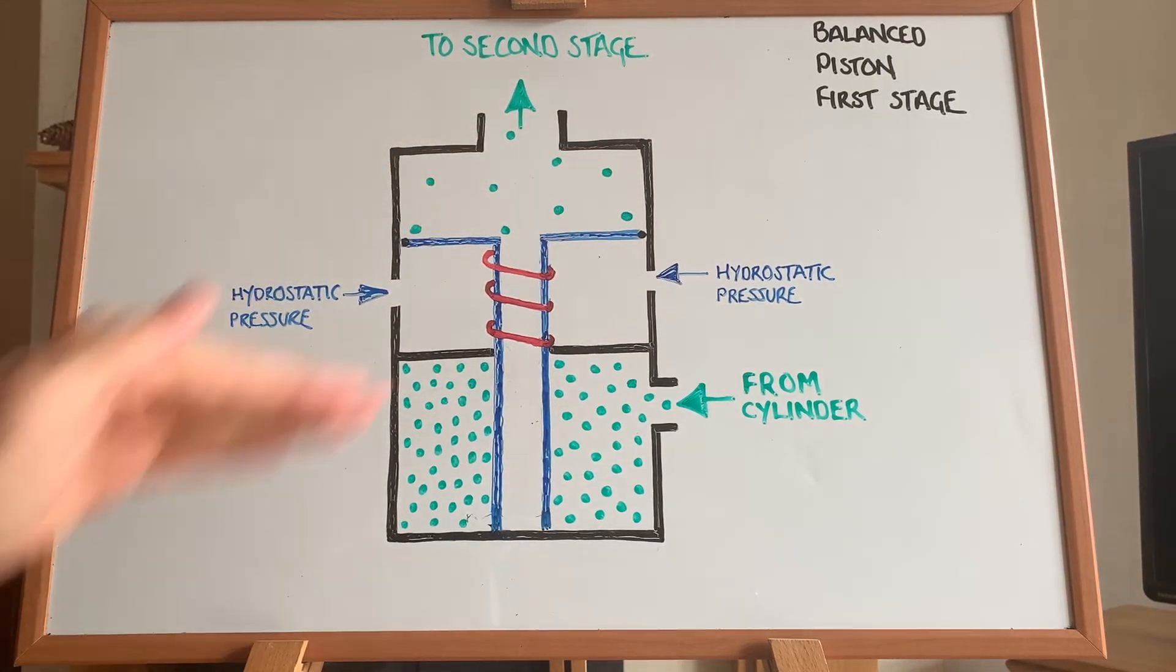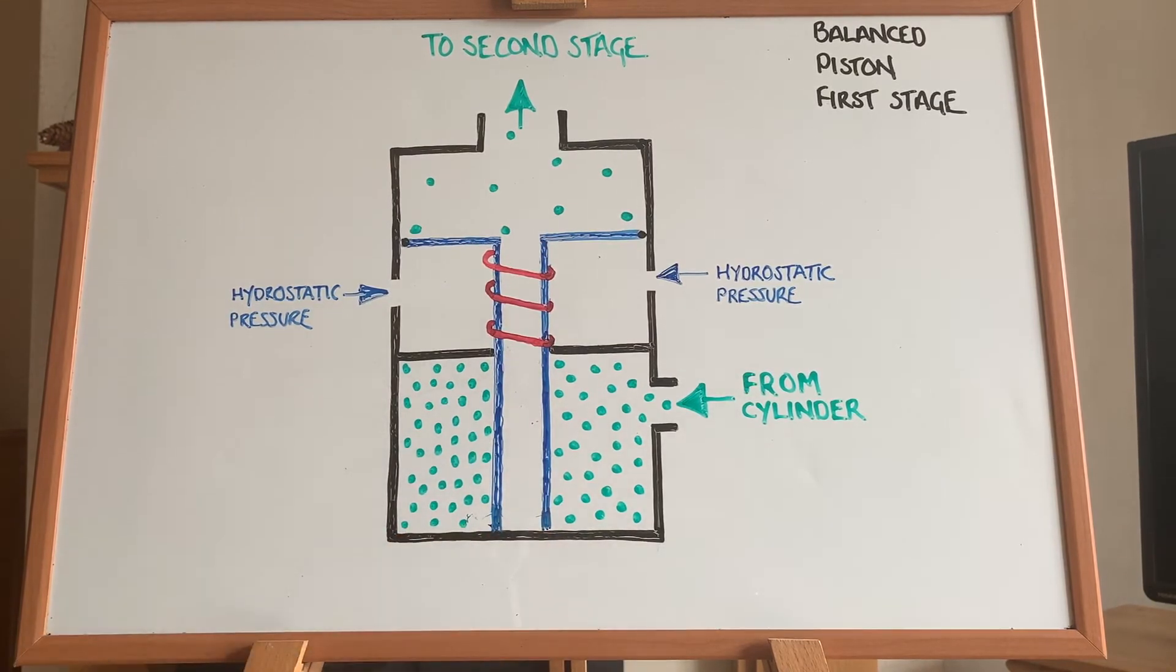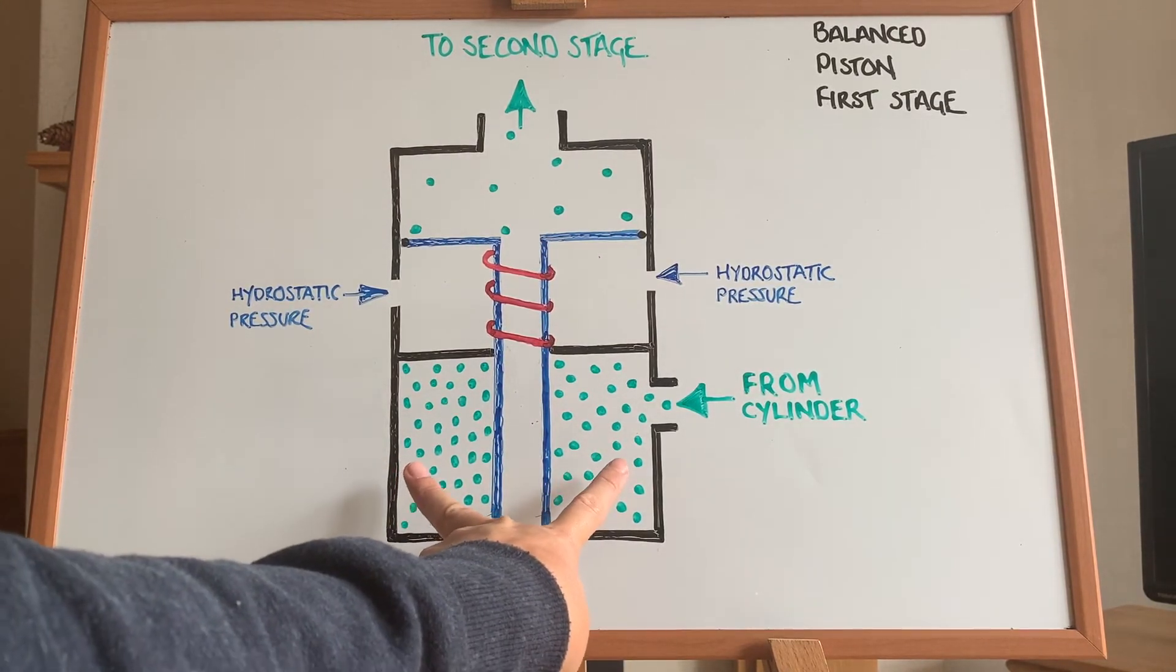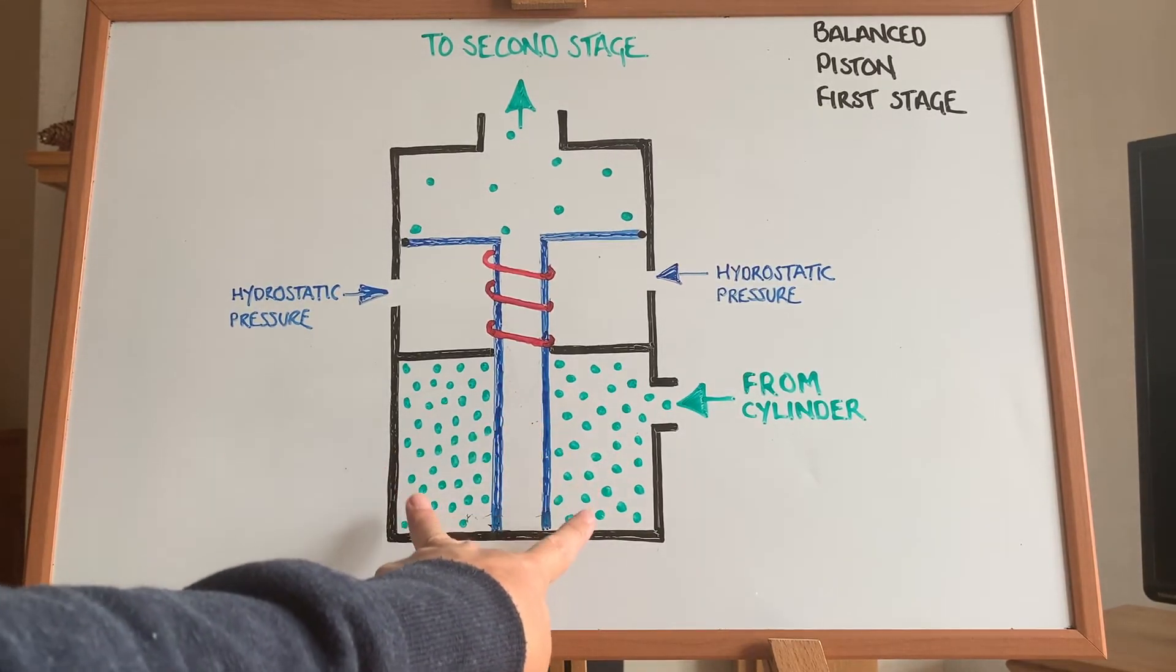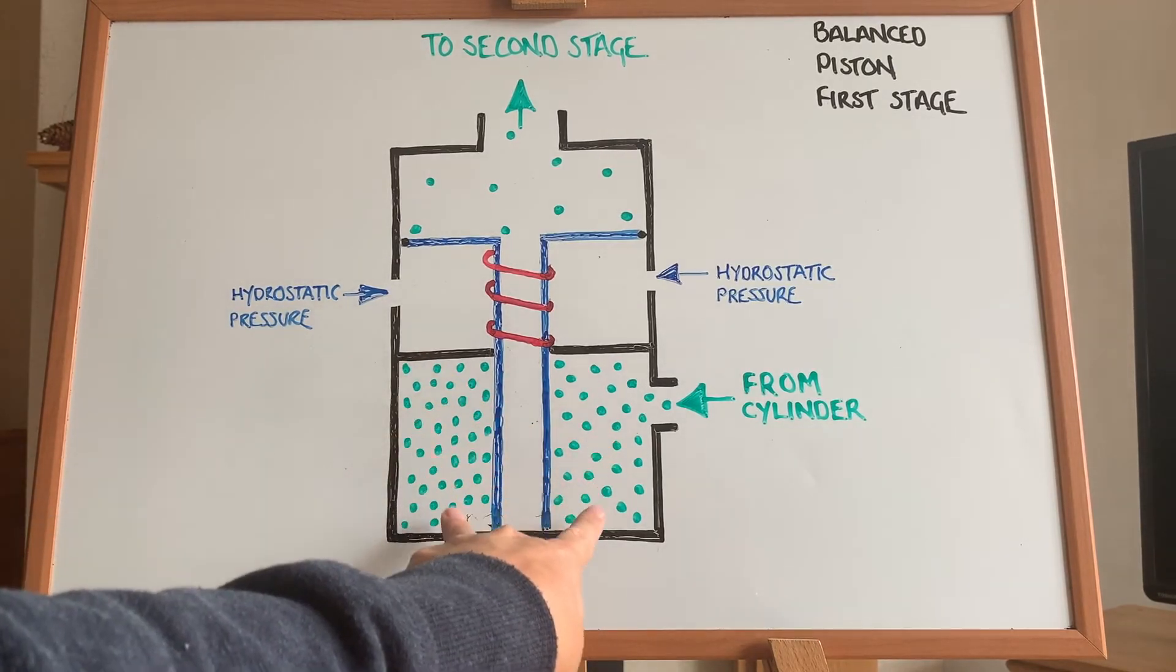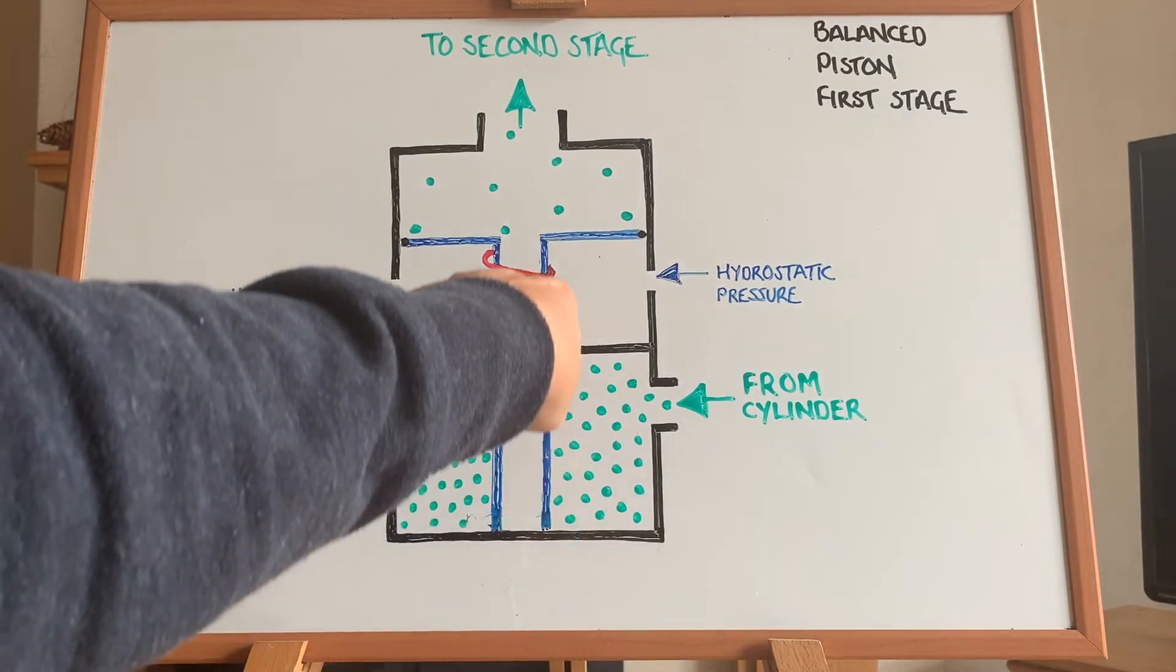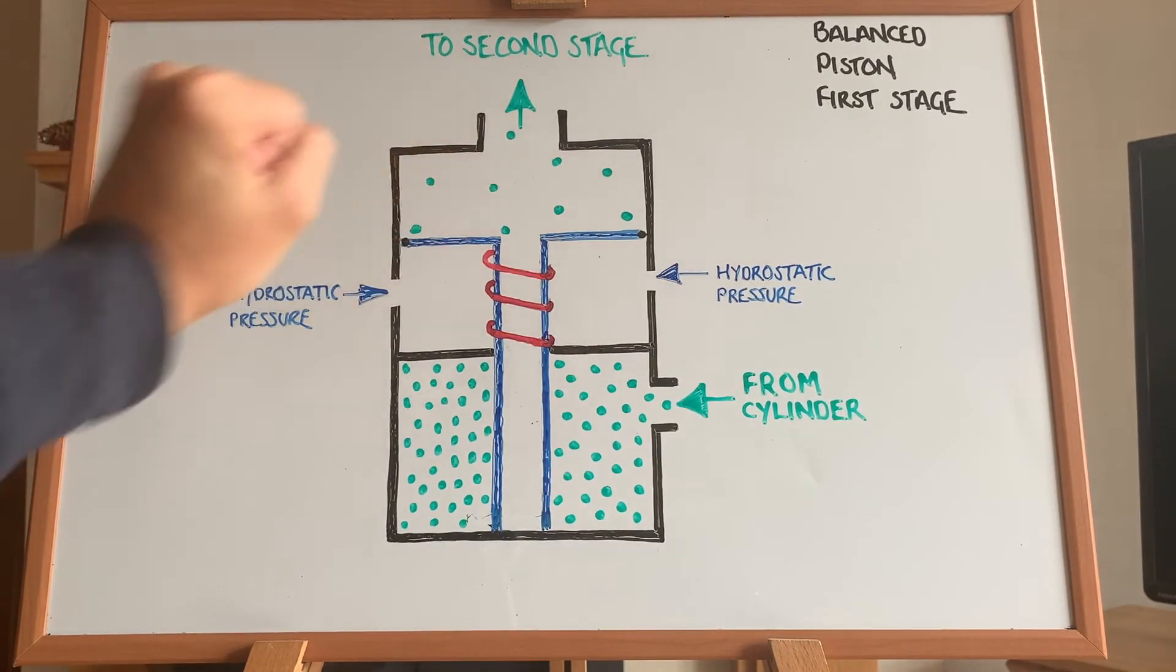As that piston pushes up, it unseats itself from the base here, which means it allows this high pressure gas to then start leaking inside of the piston because there is no seal anymore. If it rises up, the gas gets inside and it works its way up through the piston into this chamber where it starts to build again.